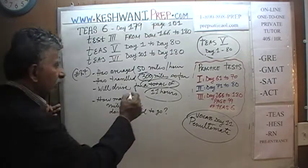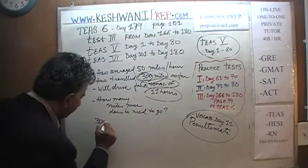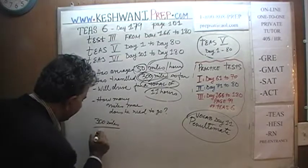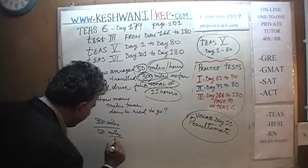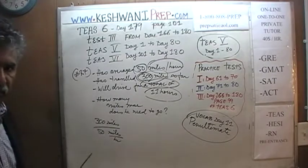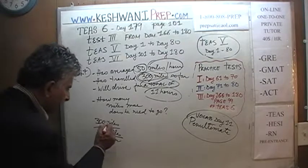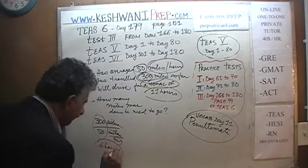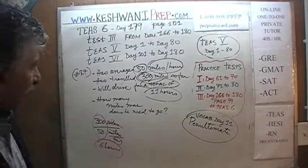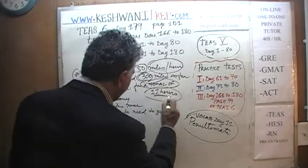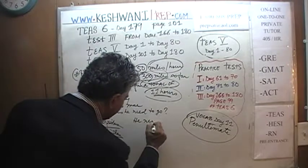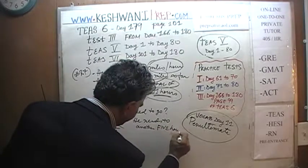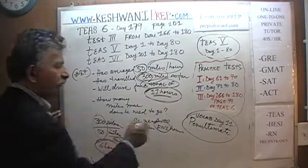We know that he has travelled 300 miles already, and we know that he has been going at 50 miles per hour. When we divide 300 by 50, it tells us how many hours he has travelled so far — the miles drop out and the hours end up on top. 300 divided by 50 is 6 hours. In other words, he has already travelled 6 hours. If he has already travelled 6 hours and the total is 11 hours, that implies he needs to go another 5 hours, because 5 plus 6 gives us the 11 hours.